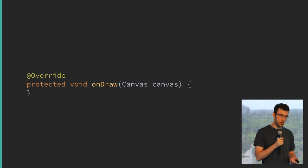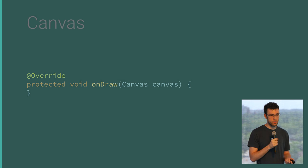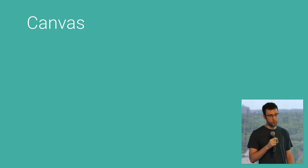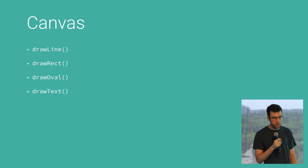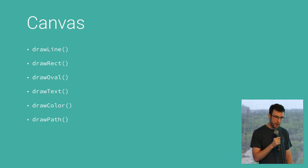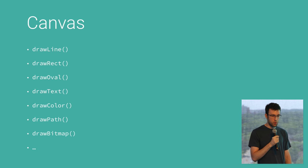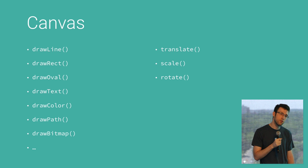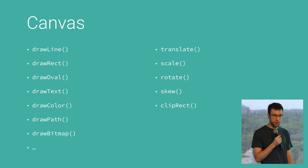The method we're going to talk about today is onDraw. OnDraw takes in a Canvas. A Canvas is a class that lets you issue high-level draw commands that will be drawn to the screen — things like draw a line, draw a rectangle, oval, draw some text, fill the canvas with a solid color, draw a complex path, draw a bitmap, and more. You can also transform the canvas: translate it, scale it, rotate it, skew it, or even clip it.